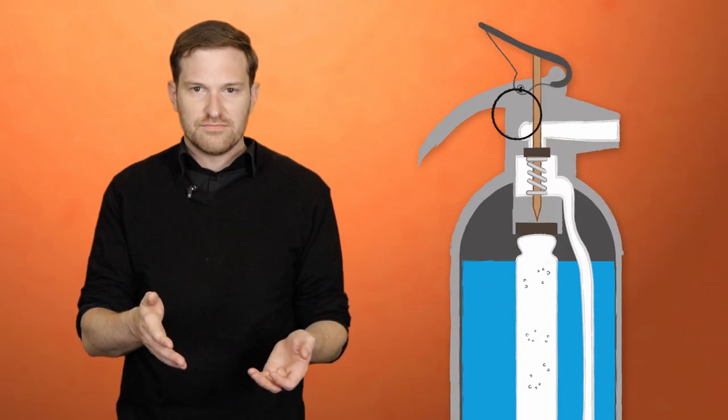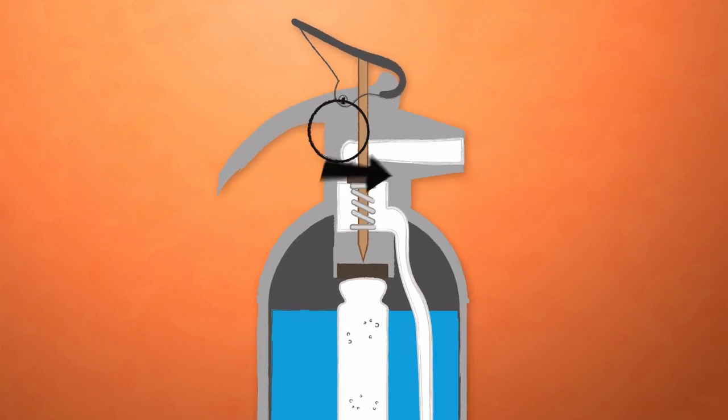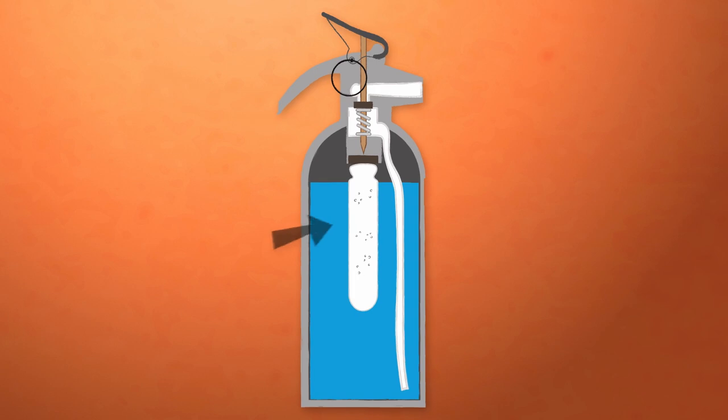Imagine a fire extinguisher cut in half. That plastic siphon tube there leads from the bottom of the fire suppressant reservoir to the top of the extinguisher. A spring-mounted valve blocks the passageway from the siphon to the nozzle. At the top of the cylinder, there's a smaller cylinder filled with a compressed gas, liquid carbon dioxide for example.